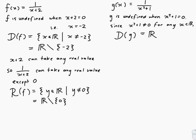Let's look at the range of g. We find it by looking at all the y values that g can produce. Let's look at what values we can get out of x squared plus 1, and then do 1 over those values. For any real x, x squared plus 1 is greater than or equal to 1, since x squared has to be greater than or equal to 0 being squared. So therefore 1 over x squared plus 1 is less than or equal to 1 over 1, which is 1.